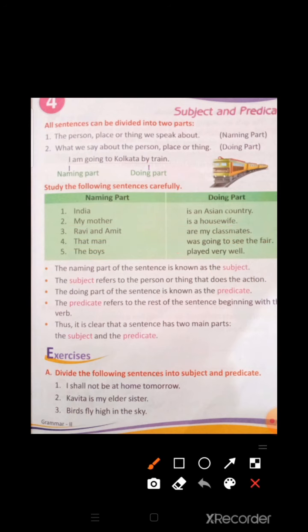The naming part of the sentence is known as the Subject. The subject refers to the person or thing that does the action. The doing part of the sentence is known as the Predicate. The doing part — predicate part — refers to the rest of the sentence beginning with the verb.